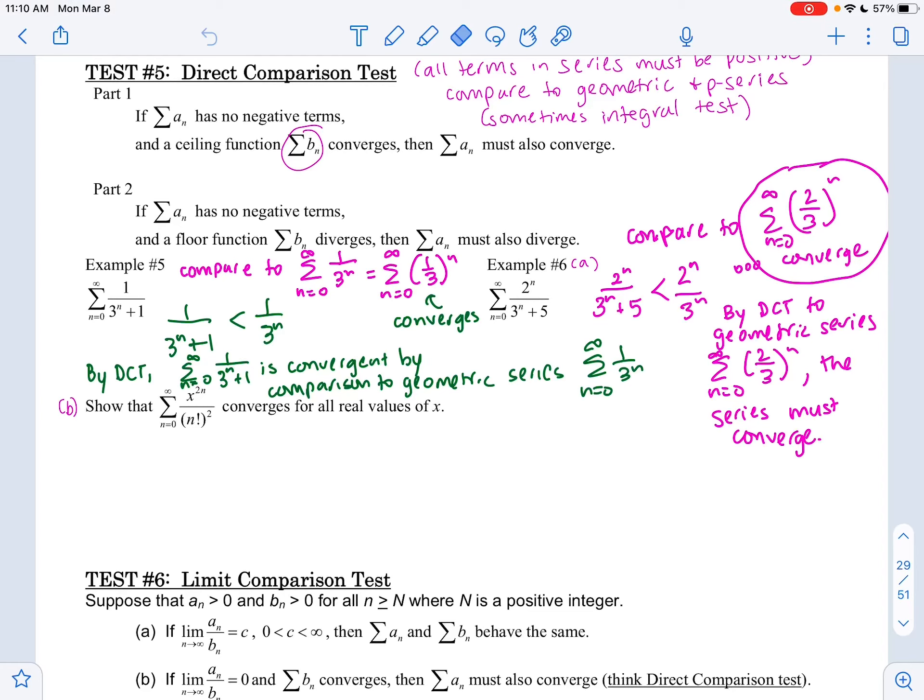For this next example, the series n equals 0 to infinity of x to the 2nth power over n factorial squared. This one is an example of one that isn't quite as obvious what you would compare it to.